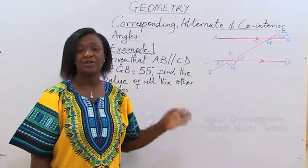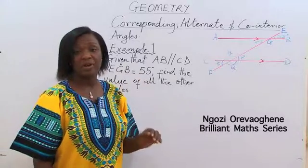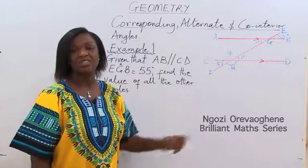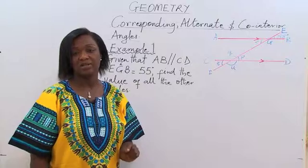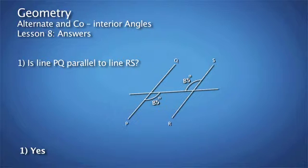We are continuing our lessons on corresponding angles, alternate angles, and co-interior angles. Before we continue, let's review the last exercise. Question 1: Is line PQ parallel to line RS? The answer is yes. The reason is the two angles both measure 85 degrees and they are alternate and equal. Therefore, the lines that formed them are parallel lines.